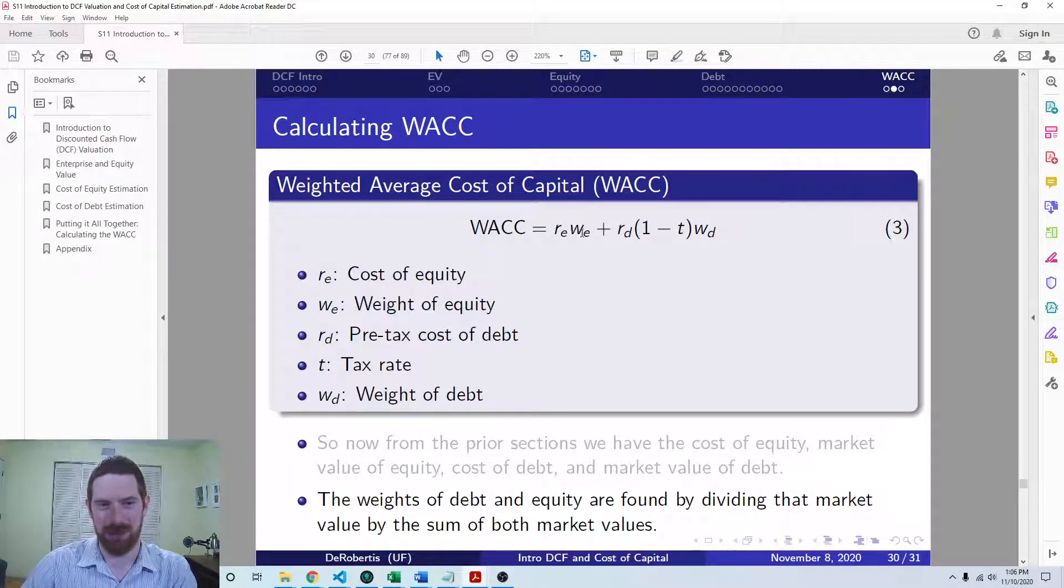So you should have something between zero and one for the weights on each of these. And then we have all the components into this formula, so you just put them together and that ultimately gets you the WACC.